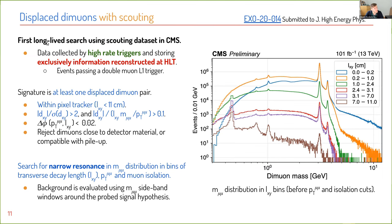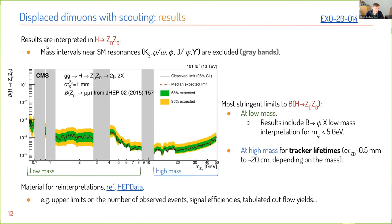Moving to scouting: this search uses data collected by high-rate triggers storing exclusively information reconstructed at HLT in events passing double-muon Level-1 triggers. The signature is at least one displaced dimuon pair reconstructed in the pixel tracker, with cuts on DXY significance and DXY scaled by proper time. To reduce backgrounds, there are tight cuts on collinearity plus a veto on dimuons compatible with detector material or pile-up. The idea is to search for a narrow resonance in bins of LXY, dimuon pT, and isolation. Results are interpreted in terms of a pair of dark photons. I want to highlight the very low-mass regime, which can only be explored with scouting.